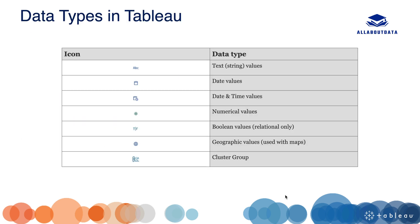These are the data types supported in Tableau: text, represented by 'ABC'; date, represented by a calendar symbol; date and time, represented by a calendar and clock symbol; and numeric value, represented by a hash symbol.